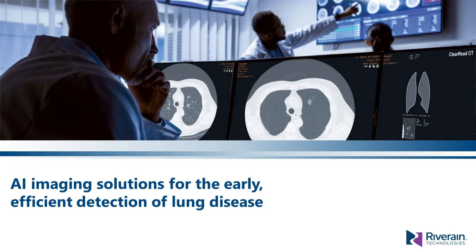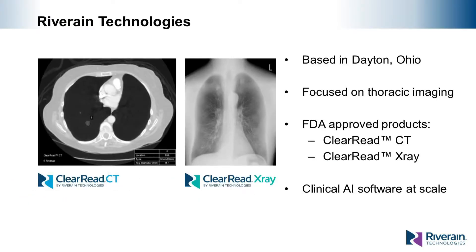Welcome to River Rain Technologies' presentation on AI imaging solutions for the early, efficient detection of lung disease. With a mission to save lives through the early detection, diagnosis, and management of lung disease, River Rain Technologies has developed the ClearRead AI applications. Based in Dayton, Ohio, River Rain is a software developer building AI applications with a thoracic focus, with FDA-approved products ClearRead CT and ClearRead X-ray.